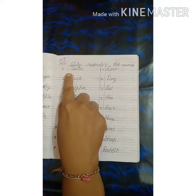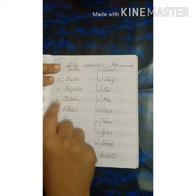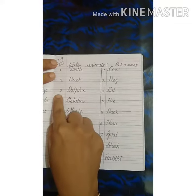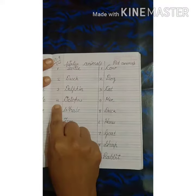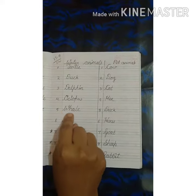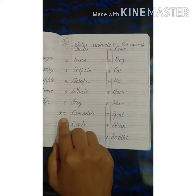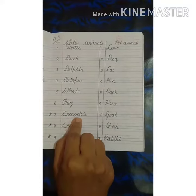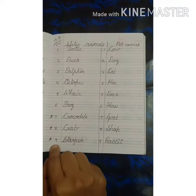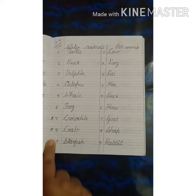So the first one is TURTLE, second one DUCK, third one DOLPHIN, fourth one OCTOPUS, fifth one WHALE, sixth one FROG, seventh one CROCODILE, eighth one CRAB, ninth one STARFISH. These three spellings are new for you.